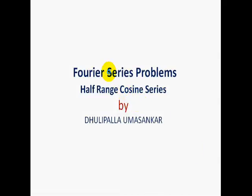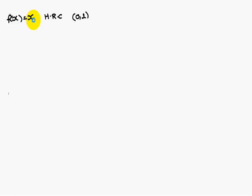Today we are going to discuss Fourier series half range cosine series problem. f(x) is equal to x as given. We have to find out half range cosine series 0 to l is the interval. So f(x) is equal to Fourier expansion is a0 by 2 plus sigma n equals 1 to infinity an cos nπx by l.